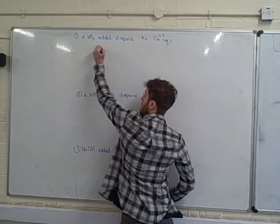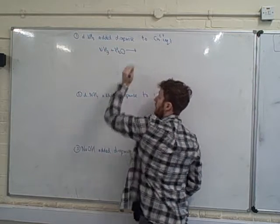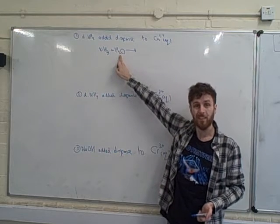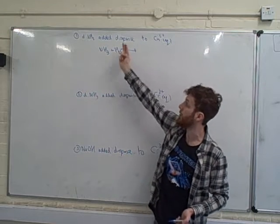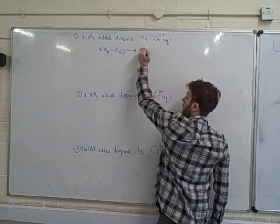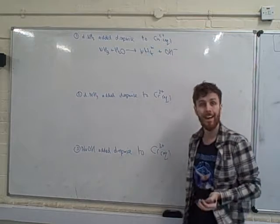So first of all, the ammonia is going to react with water. Now, as the nitrogen has a lone pair, it can act as a base, and the water can actually act as an acid and donate a H+ to the ammonia. And that will make ammonium, NH4+, and hydroxide.